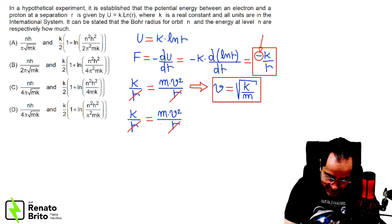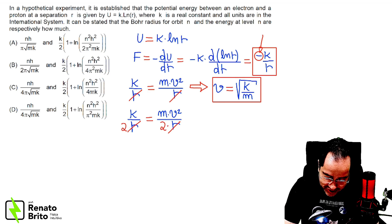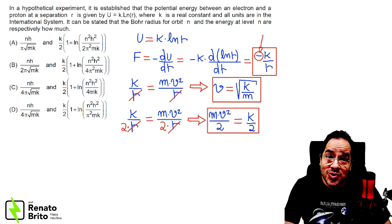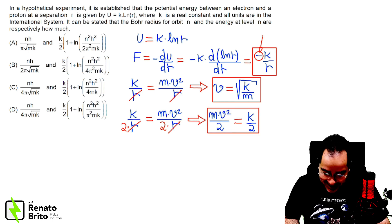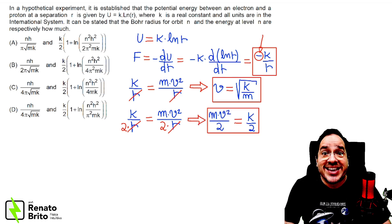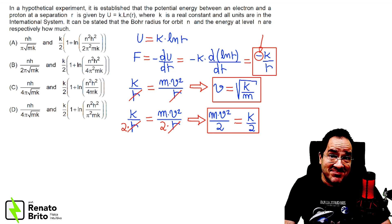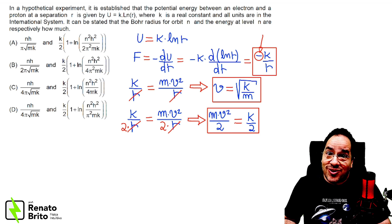Let us write a 2 below on both sides, and here it is. The kinetic energy of this electron is independent of the distance r. It's not my fault — that's just what the math gives us.